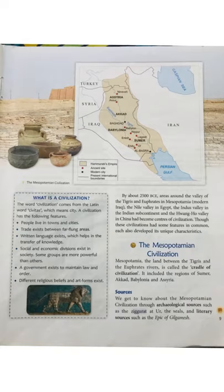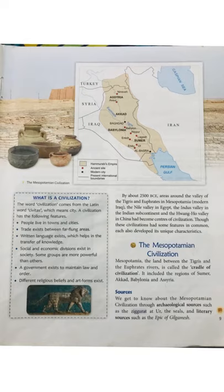These civilizations arose somewhere around 2500 BCE. In the map, the Iraq portion is what was Mesopotamia, and you can see the Euphrates and Tigris rivers there — modern Iraq was Mesopotamia. All these civilizations arose near rivers, had some things in common, and also developed their own unique characteristics.